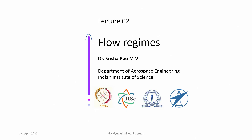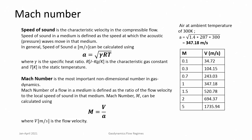The most important non-dimensional number in compressible flows or gas dynamics is the Mach number, which is the ratio of the local flow velocity to the speed of sound in that particular medium at that point. Mach number is really a local quantity. The speed of sound is a very important characteristic velocity in describing compressible flows, which for a perfect gas is the square root of gamma RT. Whenever Mach numbers become greater than 0.3, we say compressibility effects are important.